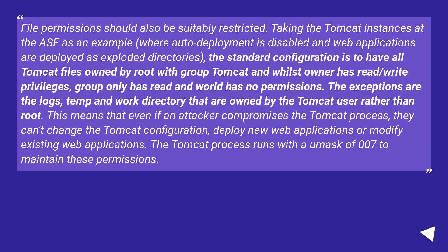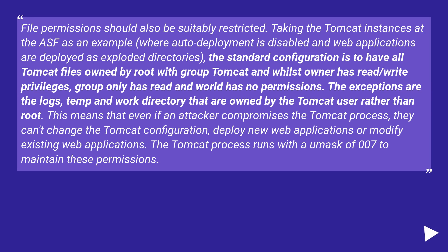The exceptions are the logs, temp, and work directories, which are owned by the Tomcat user rather than root. This means that even if an attacker compromises the Tomcat process, they can't change the Tomcat configuration, deploy new web applications, or modify existing web applications. The Tomcat process runs with a umask of 0027 to maintain these permissions.